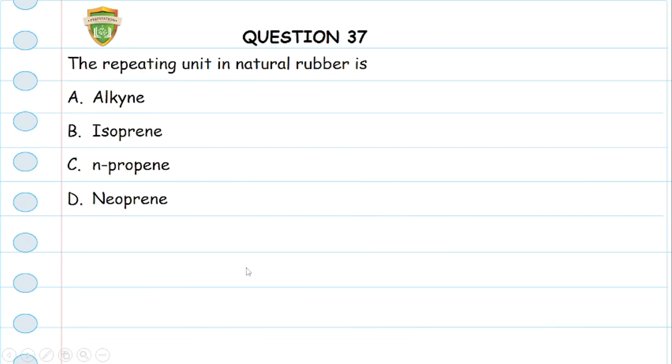Question 37: The repeating units in natural rubber is isoprene, that is the answer, isoprene which is option B. It is also known as 2-methyl-buta-1,3-diene. There's a structural rearrangement of isoprene, so when you rearrange the atoms of isoprene you can rename it as 2-methyl-buta-1,3-diene.